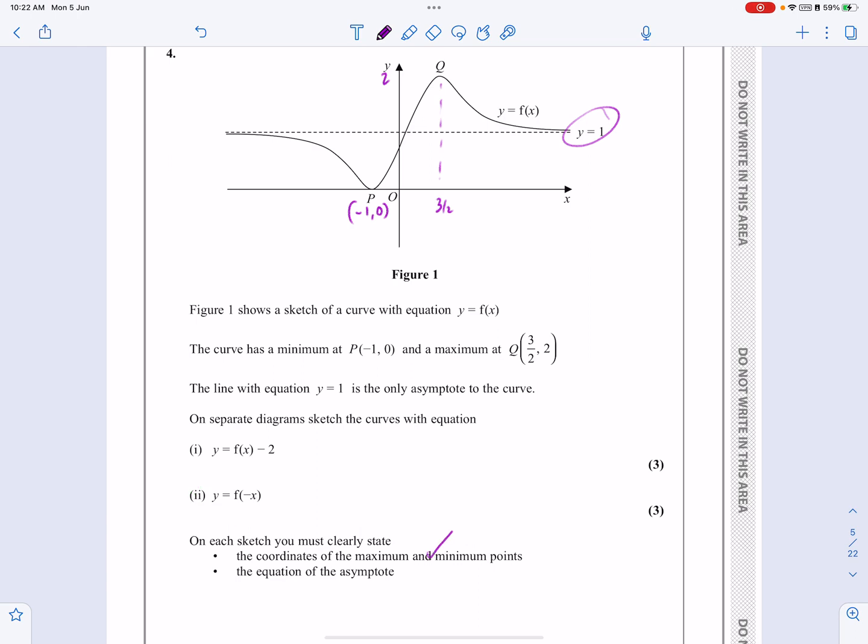Now for both of those two, it's telling us, and it does this quite often with the sketching ones, what it actually wants. It doesn't always want points of intersection with axes. It might want key points like maximums and minimums or asymptotes. So always just make sure you read this bit at the bottom here. In this case, we want the maximums and minimums and we want the asymptote.